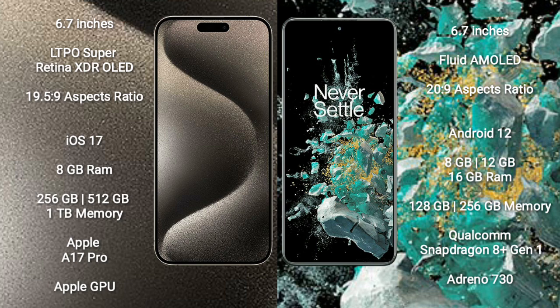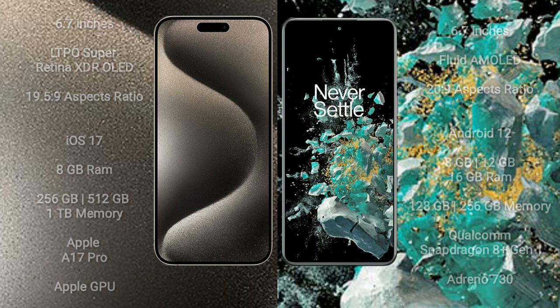OnePlus 10T comes with 8GB, 12GB, or 16GB RAM and 128GB, 256GB, or 512GB internal storage options, powered by the Qualcomm Snapdragon 8+ Gen 1 processor with Adreno 730 GPU.